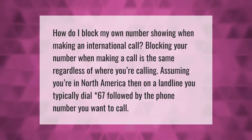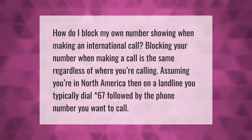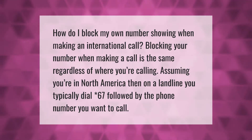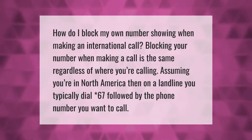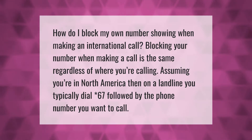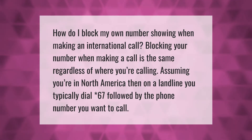How do I block my own number showing when making an international call? Blocking your number when making a call is the same regardless of where you're calling. Assuming you're in North America, on a landline you typically dial asterisk 67 followed by the phone number you want to call.